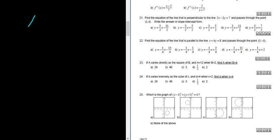So we have x plus 4y equals 8 and passes through the point 3, negative 1. So 3, negative 1. So we're looking for the equation of the line that's parallel to this line and passes through this point.